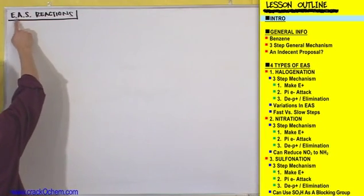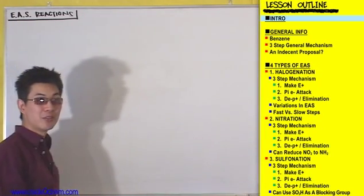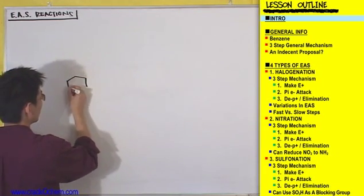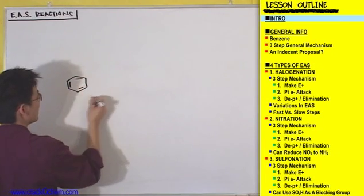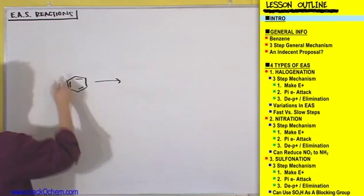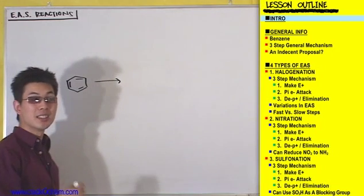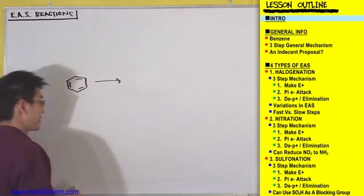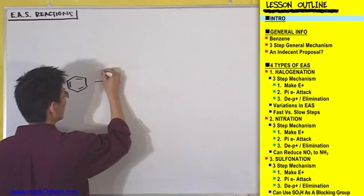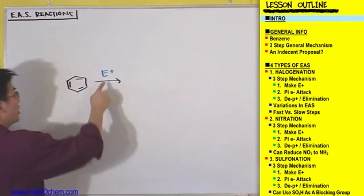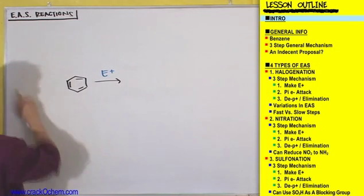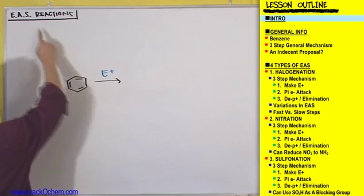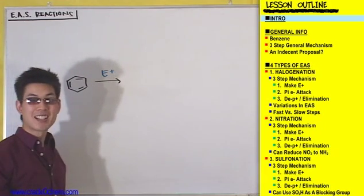Let's start out with the A of EAS — what does the A stand for? Aromatic. So let's take an aromatic ring such as benzene. And we're going to throw in this aromatic ring with the E of EAS. What does the E stand for? Electrophilic, or electrophile. So let's throw in an electrophile, abbreviated E+. You take an electrophile E, throw it in with an aromatic ring A, and you're going to get a substitution reaction.